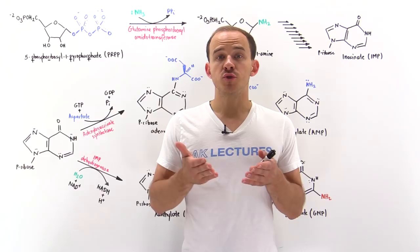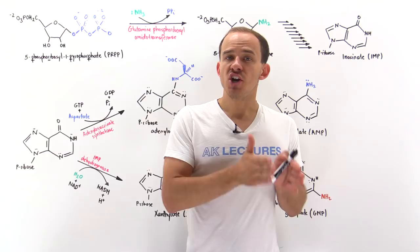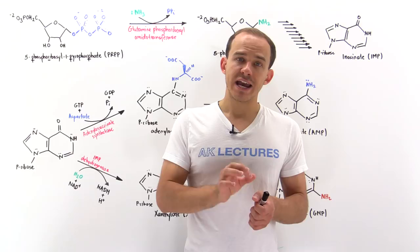In our discussion on synthesizing pyrimidines, we saw that there are two pathways by which we can build pyrimidine bases. We can either use the quick and easy method, the salvage pathway, or we can build them from scratch, and that's known as the de novo synthesis of pyrimidines.